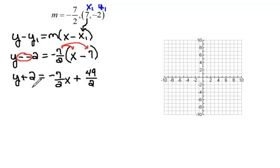Now we are almost in y intercept form, except we need to get y completely alone. So I'm going to subtract 2 from both sides to remove it from the left. So now we have y equals negative 7 halves x.